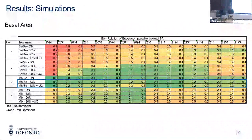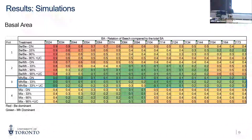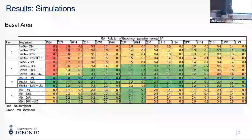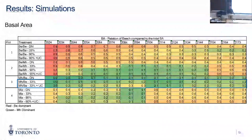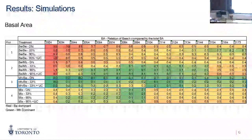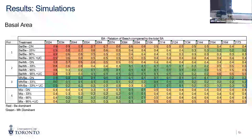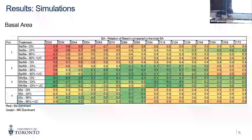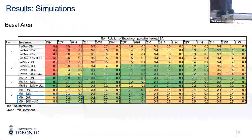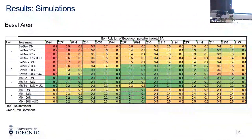For the plot with a maple-dominant overstory, we cannot use the 90% thinning since it's already a maple stand. Both the 33% thinning and understory control show similar results overall, but focusing on years 2084 and 2094 you see more beech in the understory control treatments. What's happening is that when you reduce the initial number of beech, there's less competition, so the 18% of beech left after the control grows much faster — we need to think about this when applying understory control. For the mixed stand, results are mostly good until 2044, after which all treatments converge.